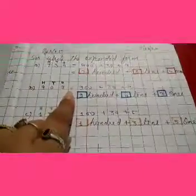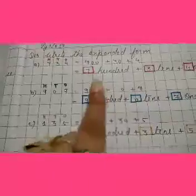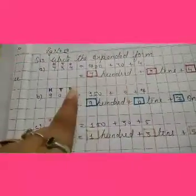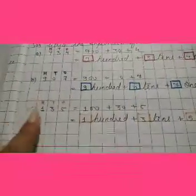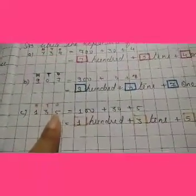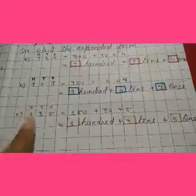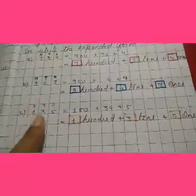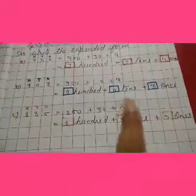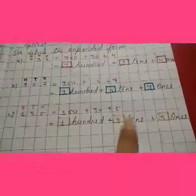Copy: 907 — 100's place is 900, 10's place is 0, 1's place is 7. Then 9 hundreds, 0 tens, 7 ones. Next: 135 — 100's position is 1, so 100. 3 is at the 10's place, so 30. 1's place is 5, so 5. Expanded form: 100 plus 30 plus 5, and 1 hundred, 3 tens, 5 ones.